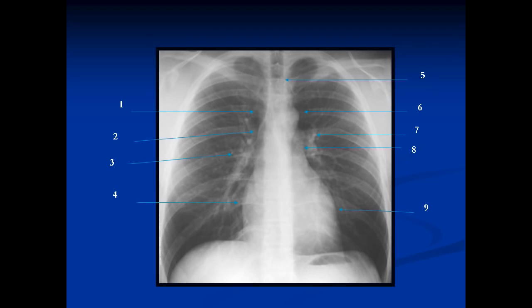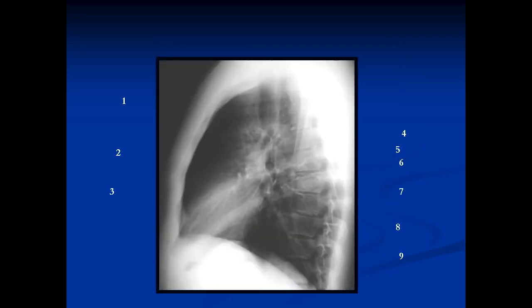Any time you see a chest x-ray, you should look for these different structures. The more you see, the more you'll be able to recognize. Any time you have consolidation in the lung, you're going to lose some of these borders.